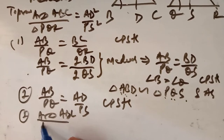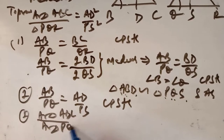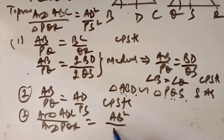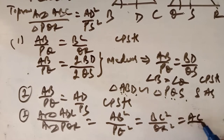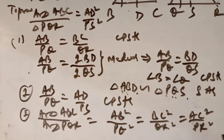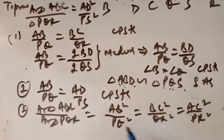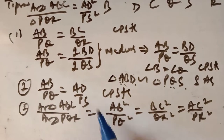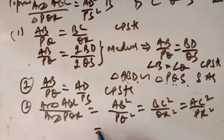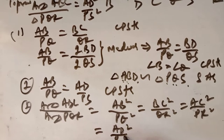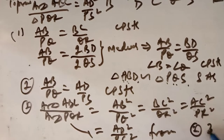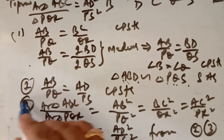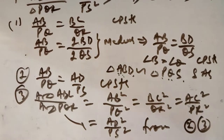We know that when two triangles are similar, the ratio of their areas equals the ratio of squares of their corresponding sides: area of ABC / area of PQR = AB² / PQ². Since AB/PQ = AD/PS, we can also write AD²/PS². From steps 2 and 3, we have proved that the ratio of area of similar triangles is equal to the ratio of the square of their corresponding medians.